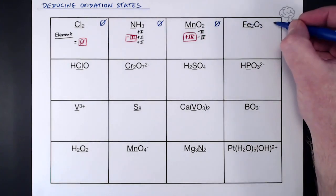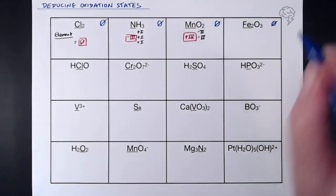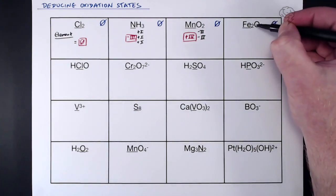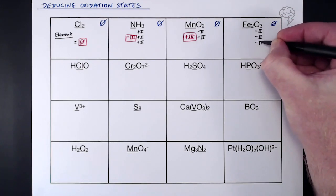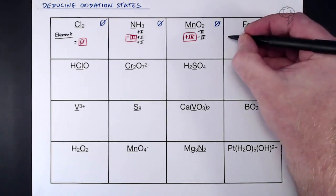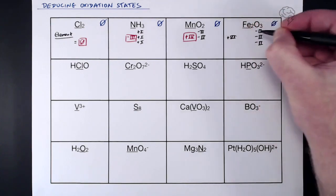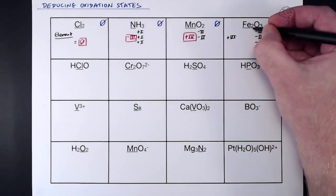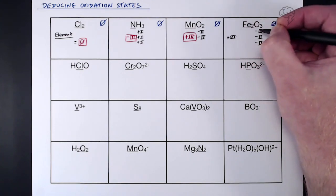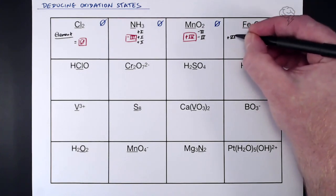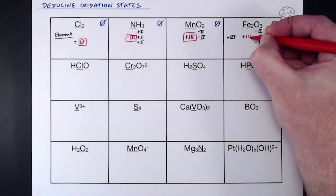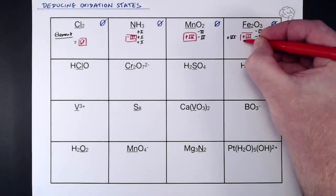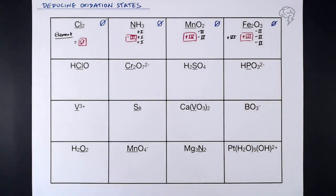Fe₂O₃: overall oxidation state of zero, no charge. We've got three oxygens this time, so three lots of -2, meaning the iron must account for +6. But notice there's a cheeky 2 — we've actually got two iron atoms in this formula. Plus six is accounted for by both irons together, so each iron must be +3. This is actually iron(III) oxide.